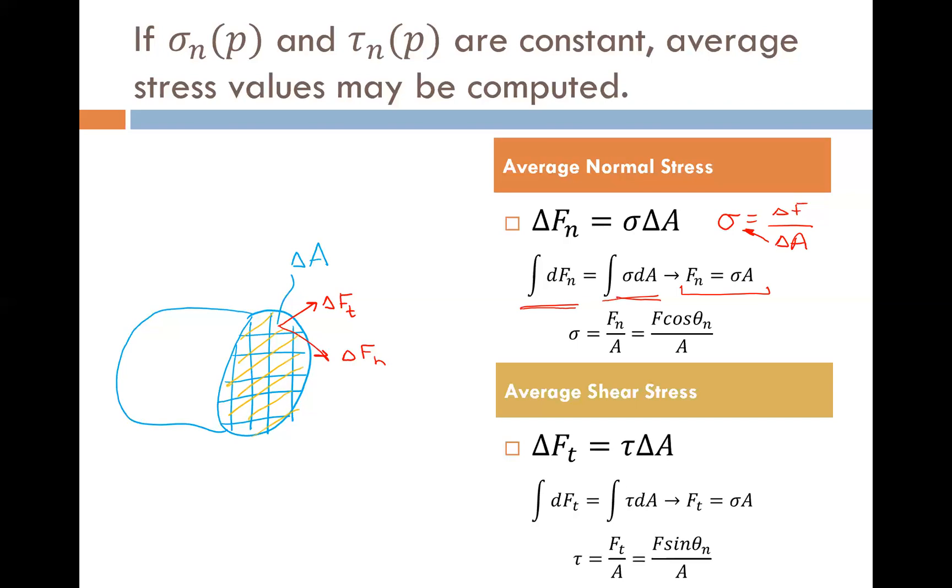So we can say that if we want an average value, then it's going to be the total force acting normal to the cross section divided by the area. And so even if the force is not completely uniform, if we use this formula, it will give us an average value.